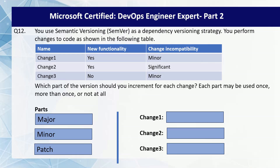When you add new functionality that might be backward compatible, you need to increment the minor version. Minor indicates that the package and its contents have extensive modifications but are smaller than a major change. These changes can be backward compatible with the previous version, although they are not guaranteed to be. When you make incompatible API changes, you need to increment the major version. Major version indicates that the package and its contents have changed significantly, often at the introduction of a new version. Major changes are not guaranteed to be compatible and usually have breaking changes from older versions, and may require a large amount of work to adopt the consuming code base.